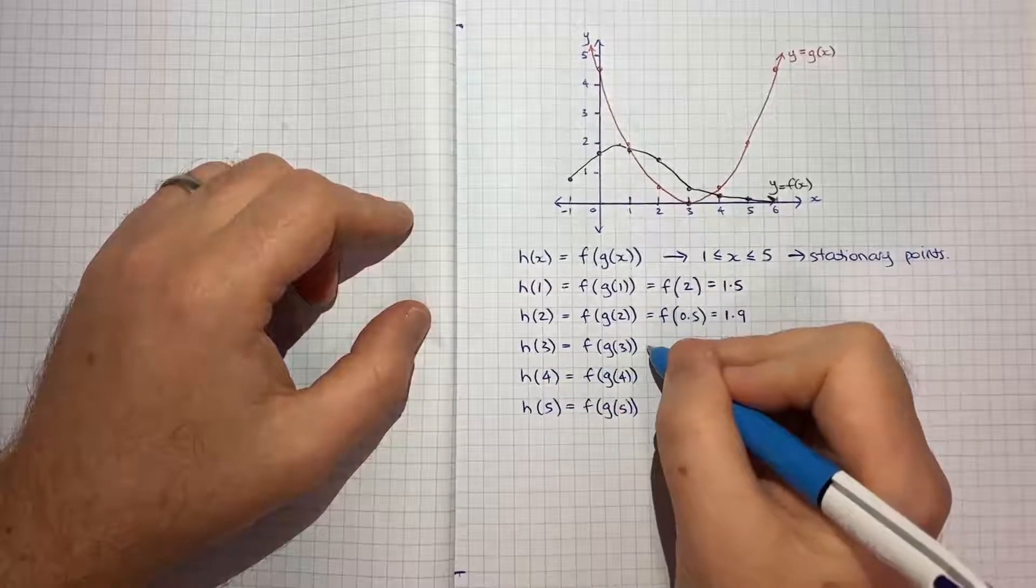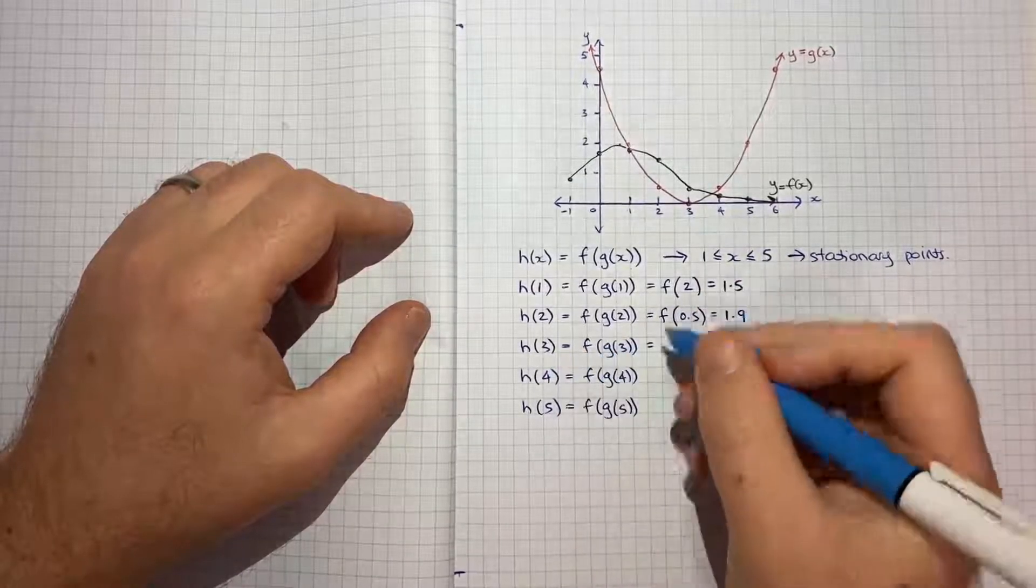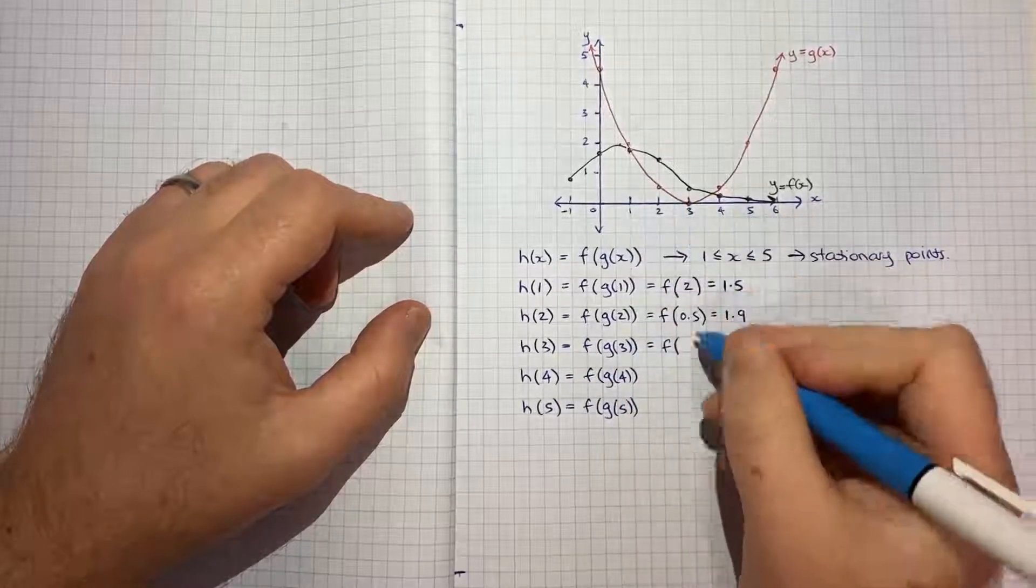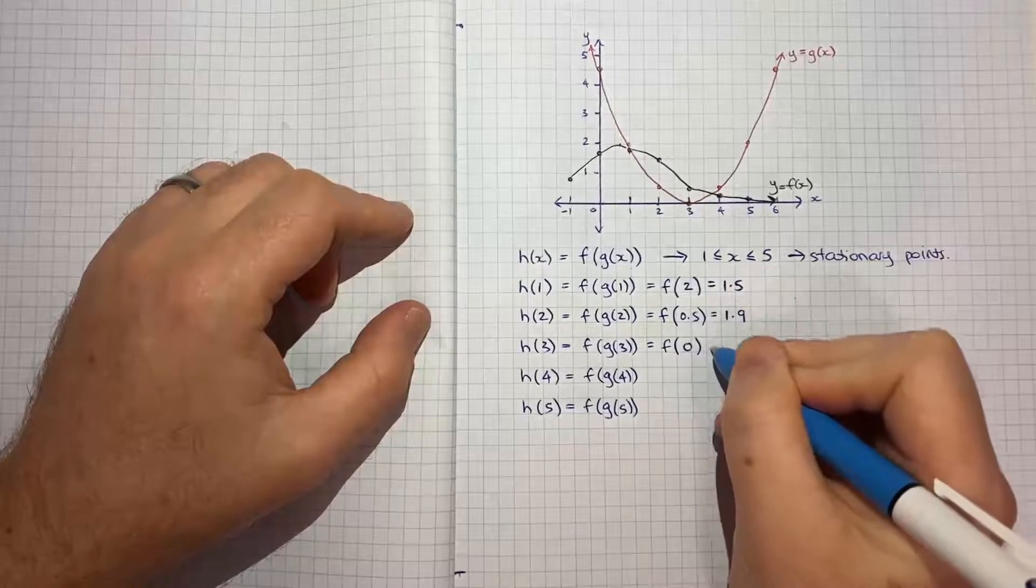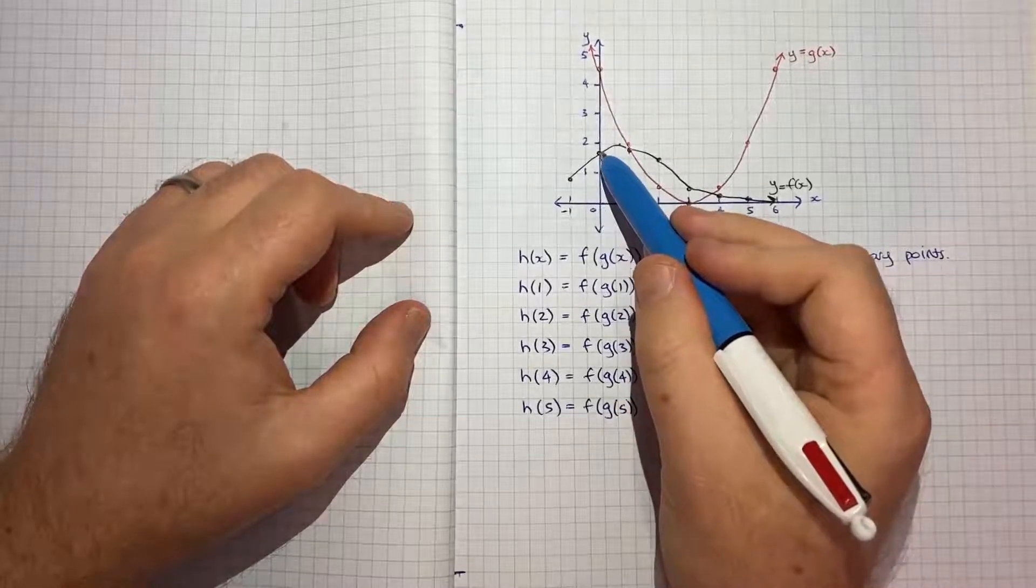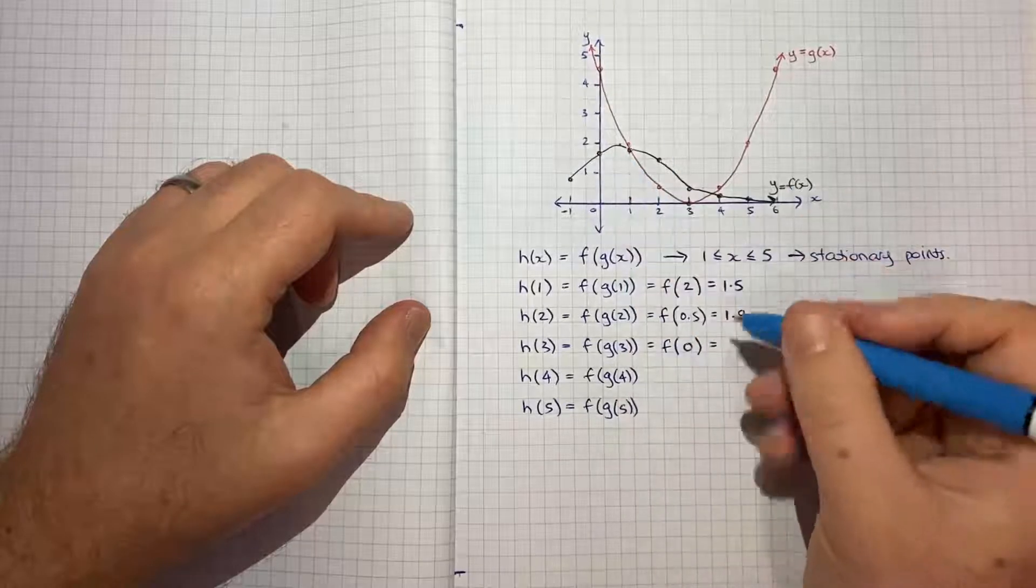When x is equal to 3 we get f of g of 3. g of 3 is 0 pretty clearly. So f of 0 is, maybe I'll call that 1.7.